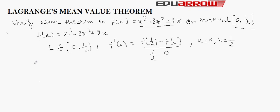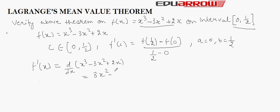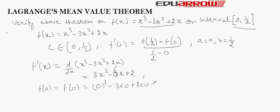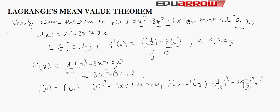First, we will find the differentiation of the given function. F'(x) is equal to d/dx of (X³ minus 3X² plus 2X), which equals 3X² minus 6X plus 2. And F(A), that is F(0), equals 0³ minus 3(0)² plus 2(0) which equals 0. And F(B), that is F(1/2), equals (1/2)³ minus 3(1/2)² plus 2(1/2) which comes out to 3/8.